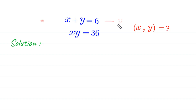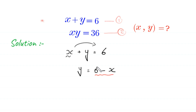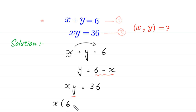Let's call this equation 1 and this equation 2. From equation 1, x plus y equals 6. We move x to the right-hand side, then we get y is equal to 6 minus x. Now, we put this value of y — which is 6 minus x — into equation 2, which is x times y equals 36. We replace y with 6 minus x.